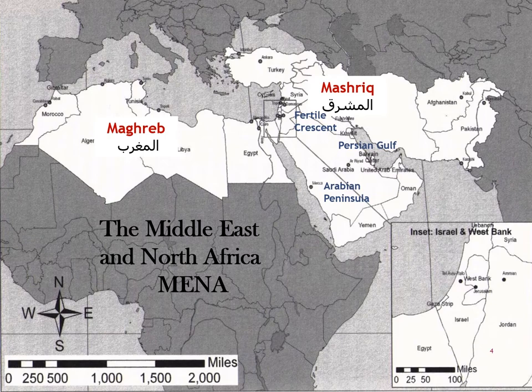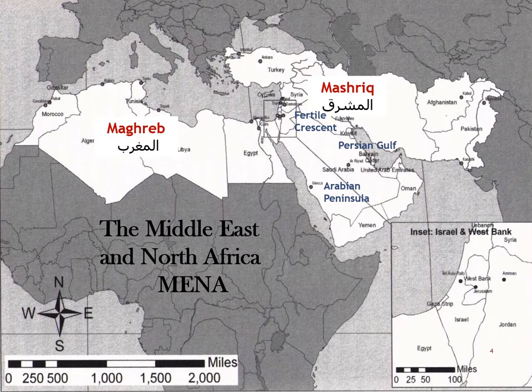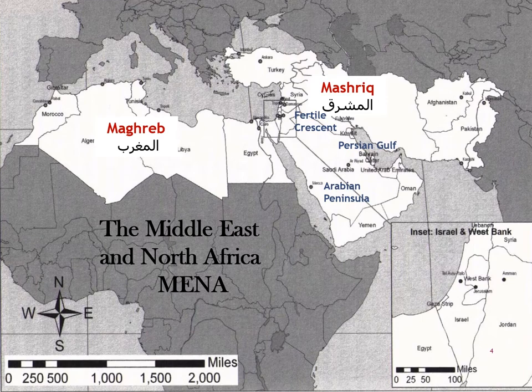This area was in fact the birthplace of a number of technological innovations, including writing, the wheel, agriculture, and the use of irrigation. So all these things emerged here in this region, not in the West, not in Europe. All this part — the part of the Middle East delineated by the Fertile Crescent, the Persian Gulf, and the Arabian Peninsula — is called the Mashrik, which in Arabic means the East, or the place where the sun rises.